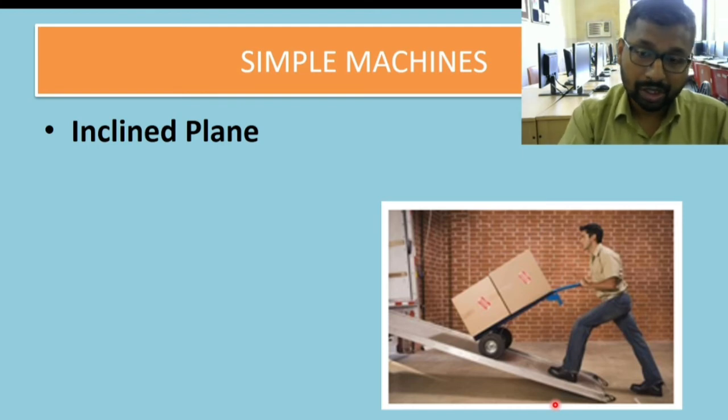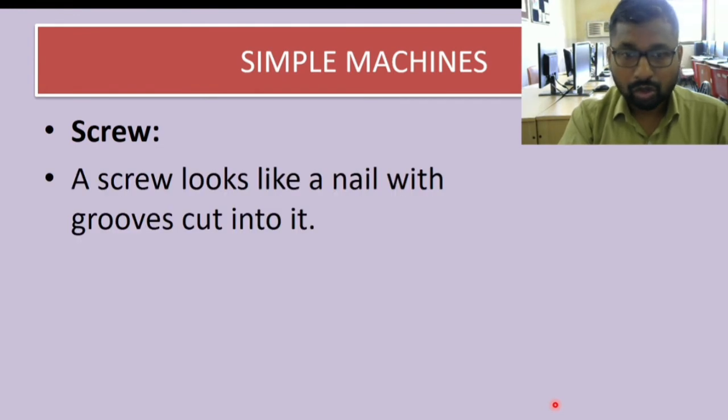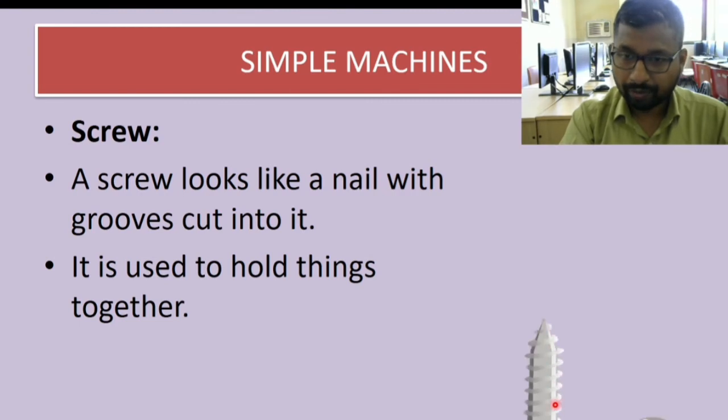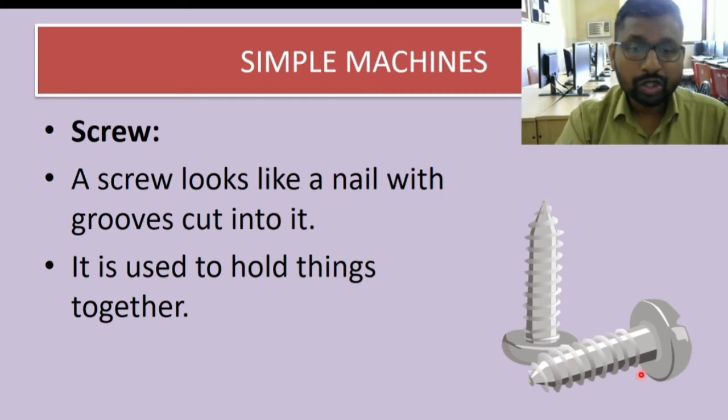Then comes a screw. A screw looks like a nail with grooves cut into it. It is used to hold things together. This is a picture of a screw. As you can see, it looks like a nail but there are grooves over it. A screw holds things together very nicely. Compared to a nail, it is much more advanced. It can be used to hold things very tightly and nicely.